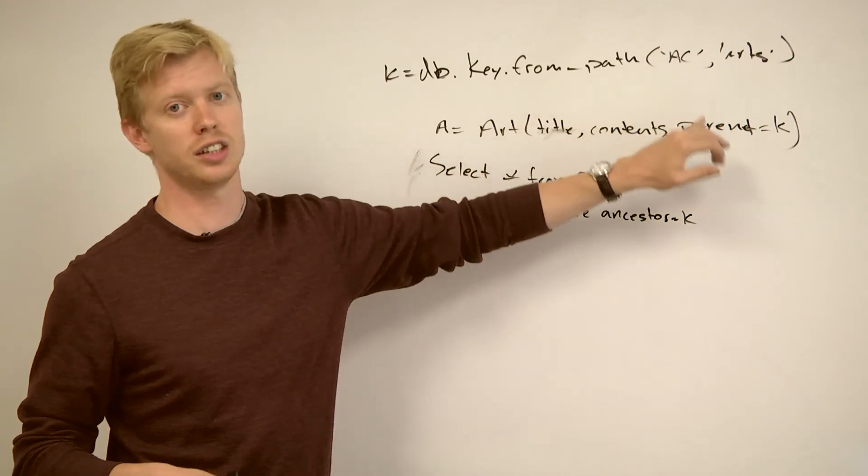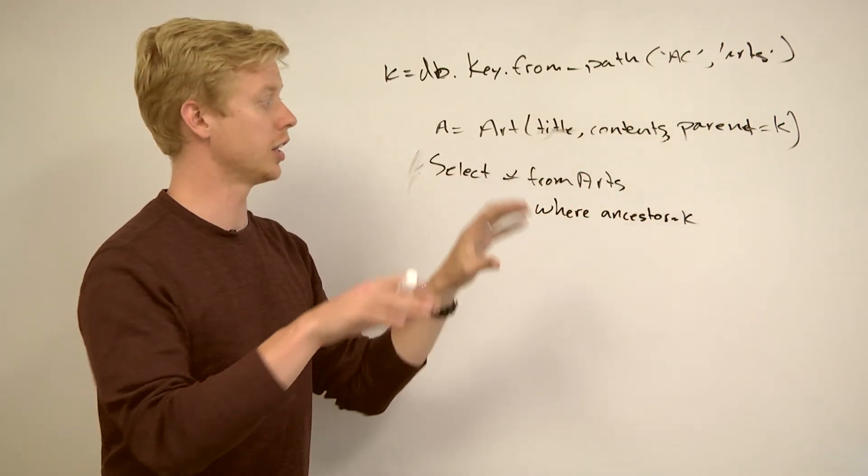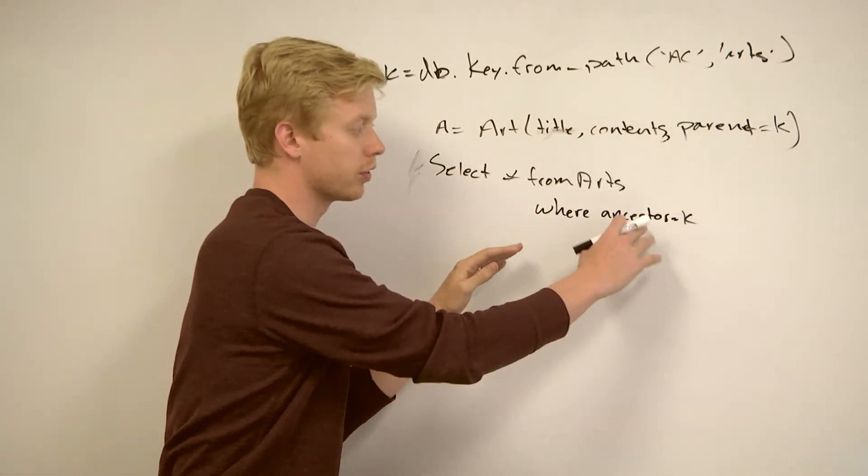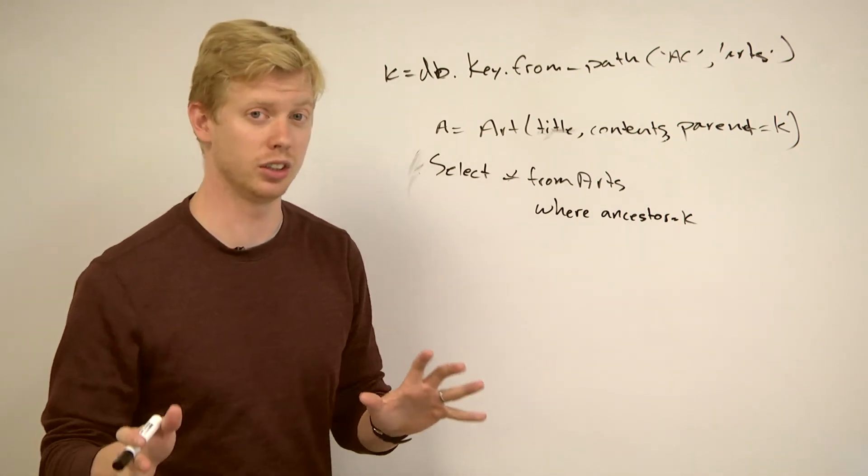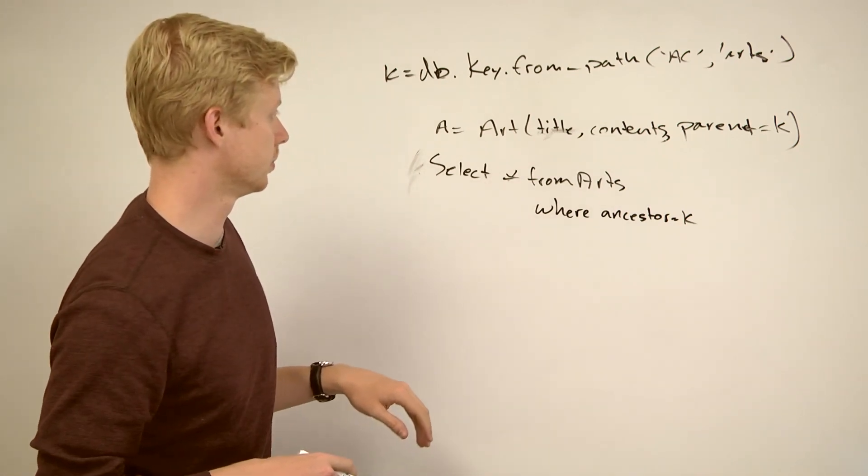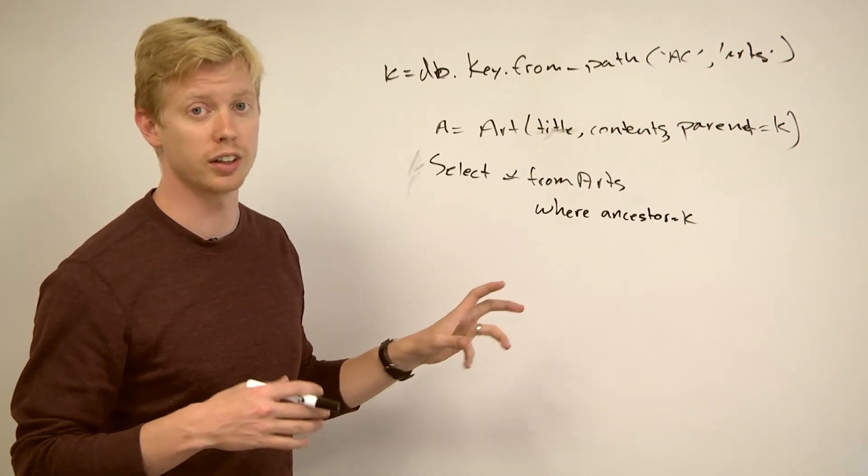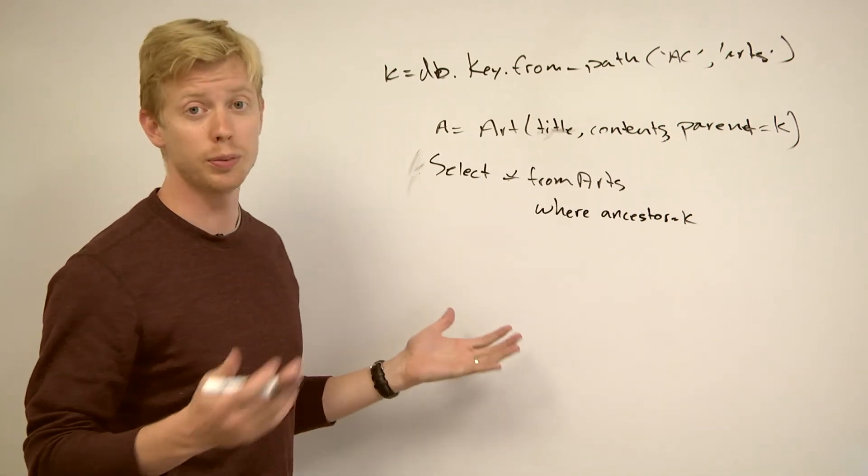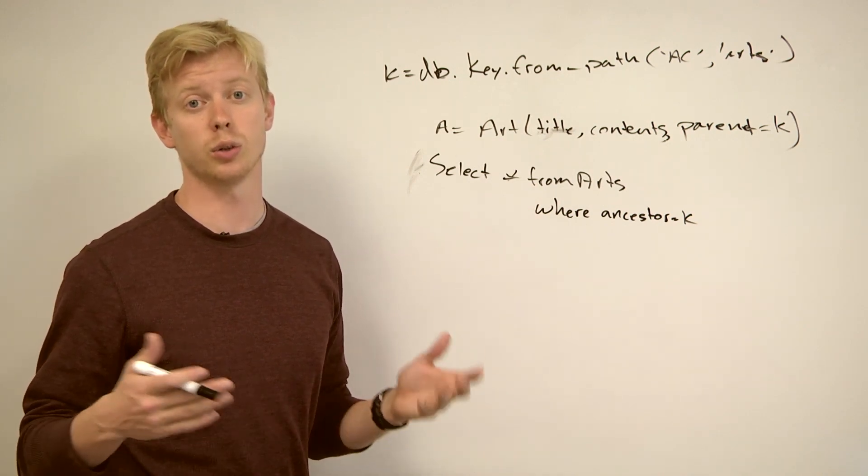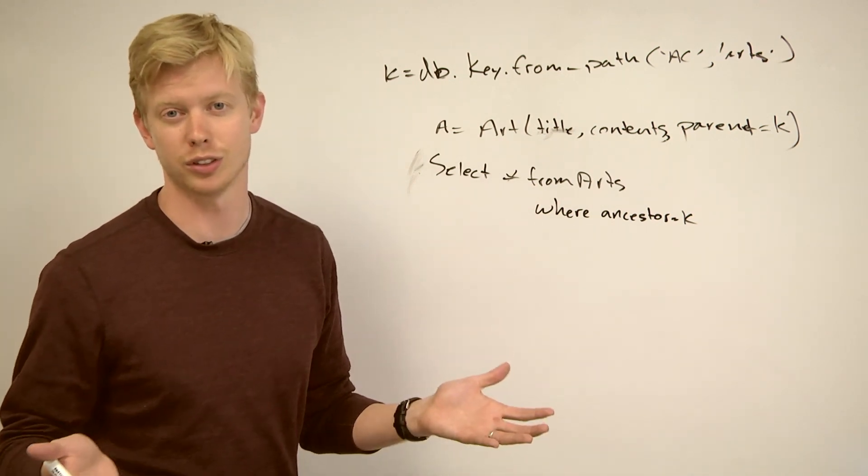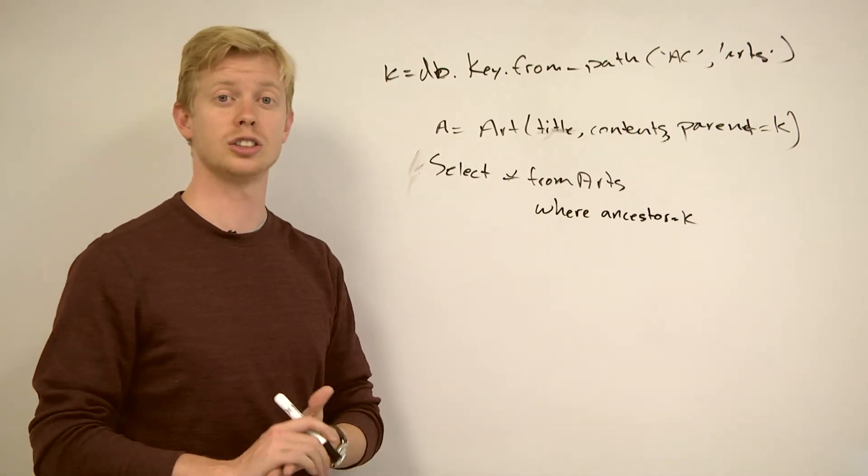This is a concept that only exists in datastore, though, this whole parent ancestor queries where you specify the ancestor thing. So it's actually as new to me as it is to you, but it helps you work around a few constraints that datastore has. So I hope that helps. There's plenty of information in the Google datastore docs, and that's what I'm basing most of what I'm telling you on anyway, so I would suggest you check that out.